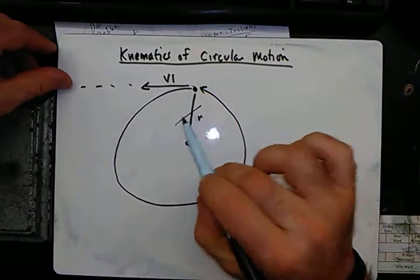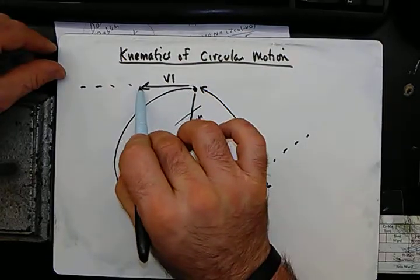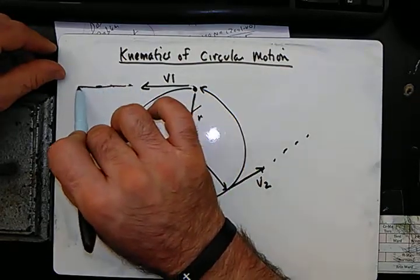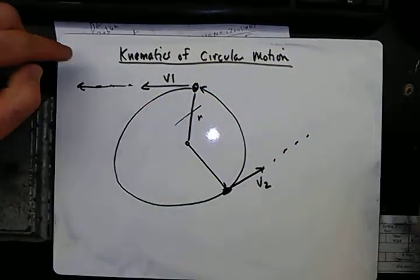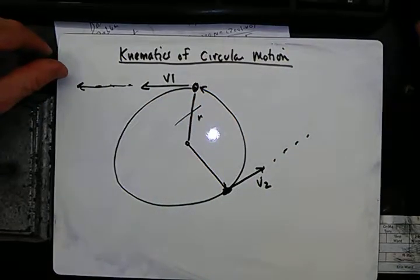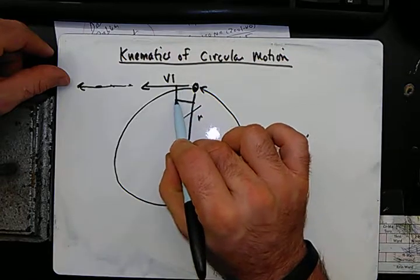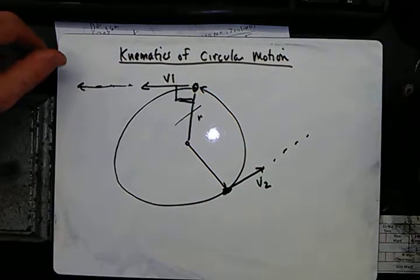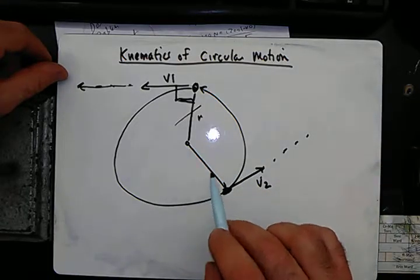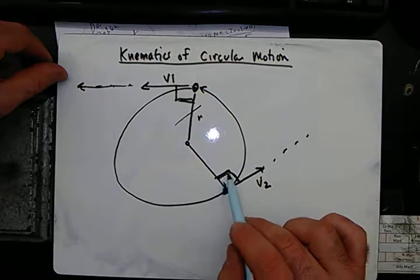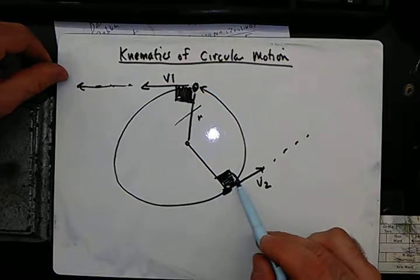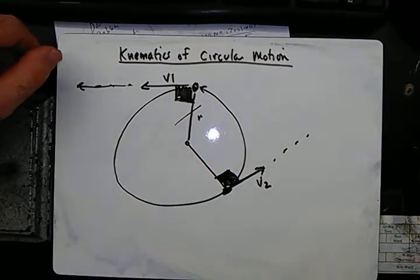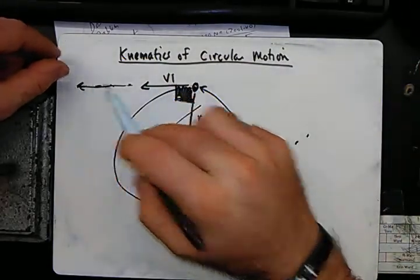Imagine cutting the string at a point in space — the object swinging around the circle, whether a planet or something else, would go off in that direction forever. The direction of the velocity is actually perpendicular to the radius of the circle. At any point, the velocity direction is perpendicular to the radius, and we'll keep that in mind as we start doing some of these problems.